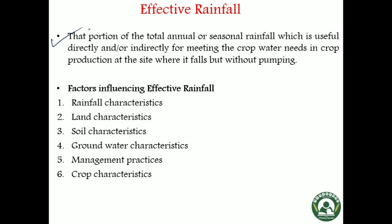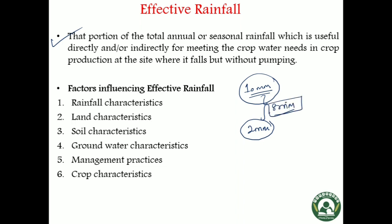Effective rainfall is the portion of total rainfall which actually contributes towards plant water requirement. Suppose 10 millimeter rainfall is there, but out of 10 millimeter, 2 millimeter is infiltrated into the soil, and the rest 8 millimeter is percolated or lost as runoff. Then this 8 millimeter is ineffective and this 2 millimeter is effective, as it infiltrates into the soil and contributes towards crop growth and development.